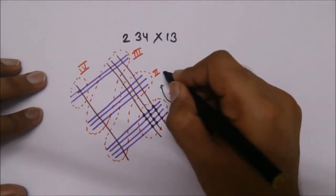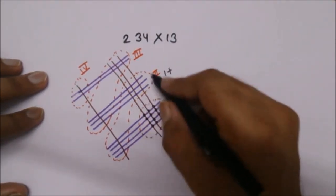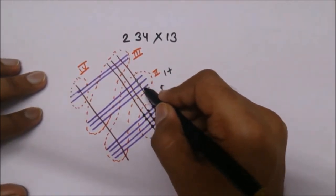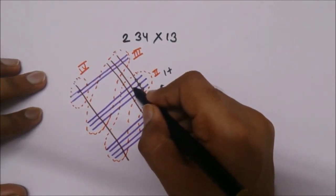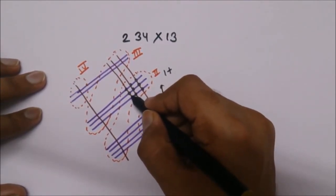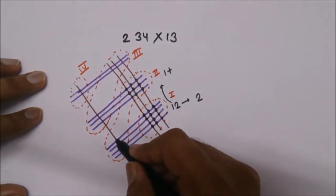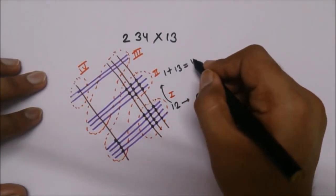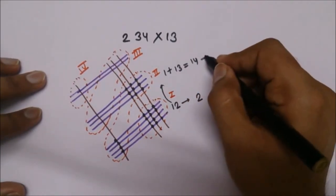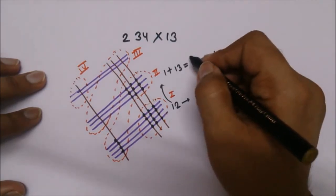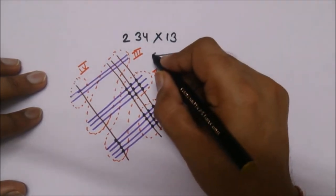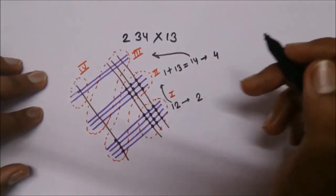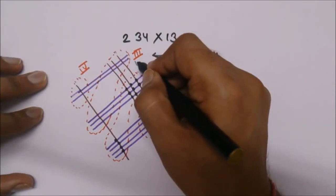So 1 will be added to the intersection count in the second region. In the second region there are 13 points, and adding the carry of 1 gives 14. We write 4 here and carry 1 to the next region.